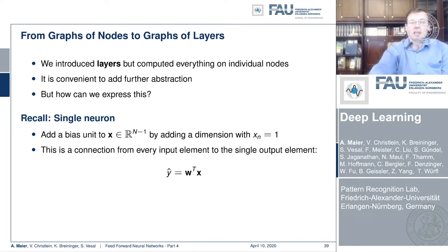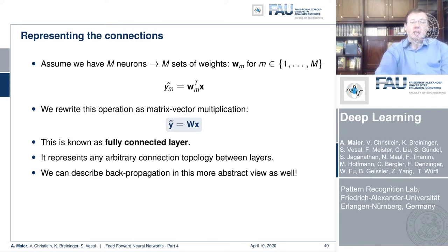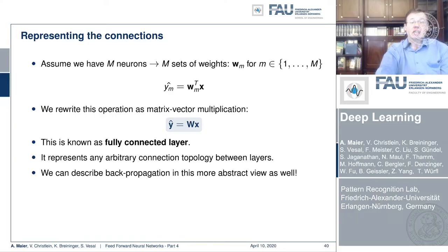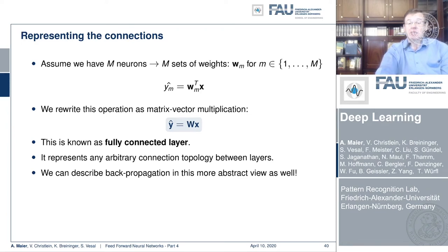Now let's think about the case where we have m neurons, which means we get y-hat of 1 through m, and all of them are inner products. If you bring this into vector notation, you can see that the vector y-hat is nothing else than a matrix multiplication of x with the weight matrix W. So a fully connected layer is nothing else than a matrix multiplication. We can essentially represent arbitrary connections and topologies using this matrix multiplication abstraction.